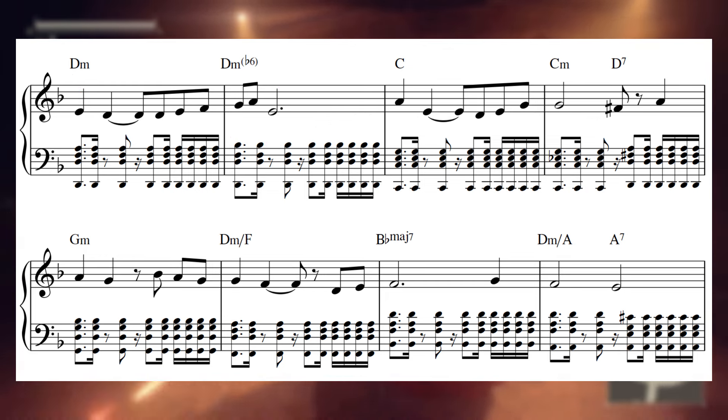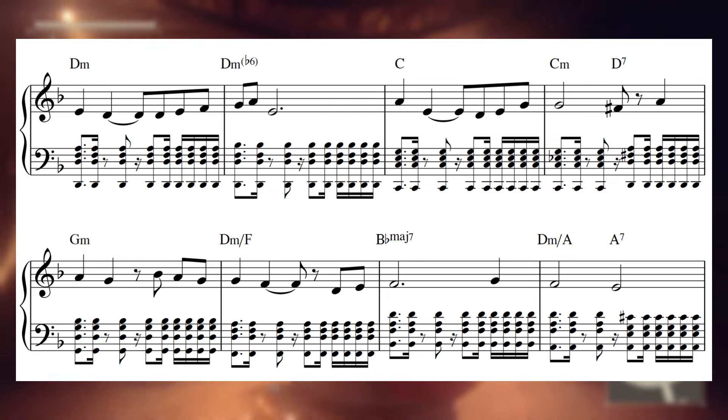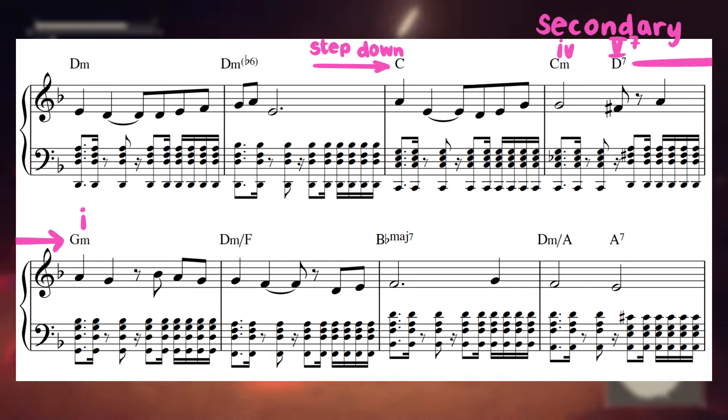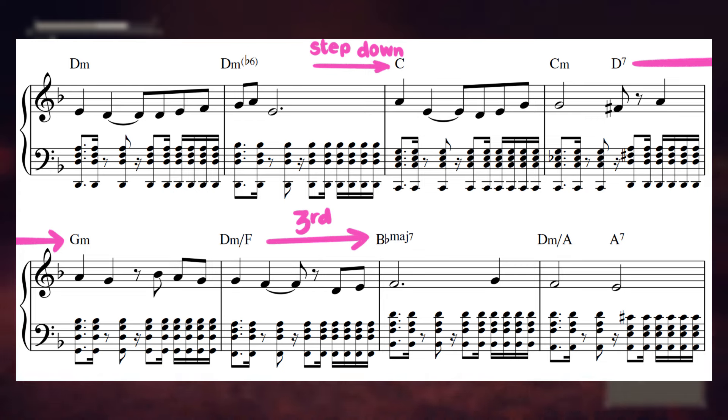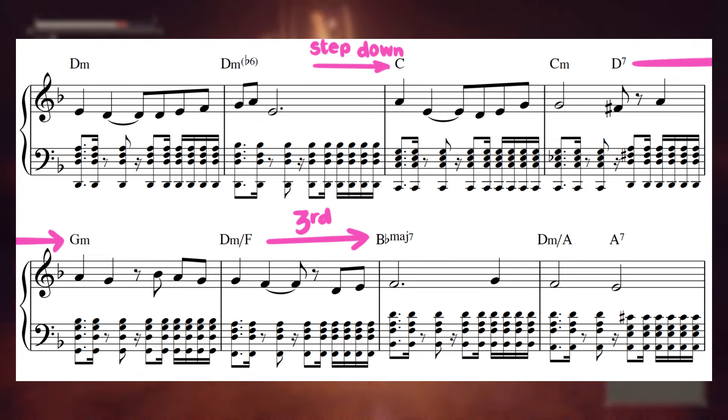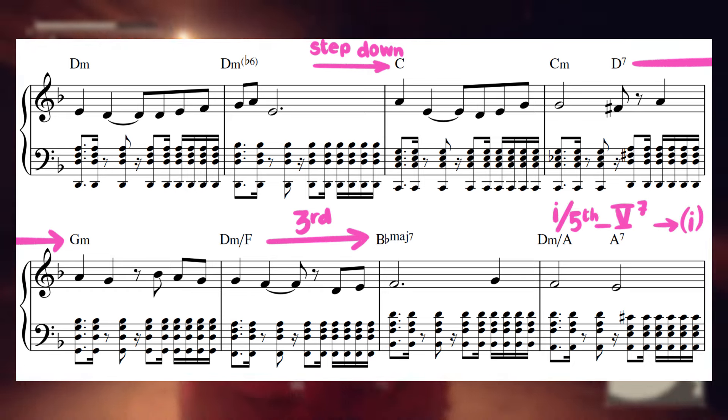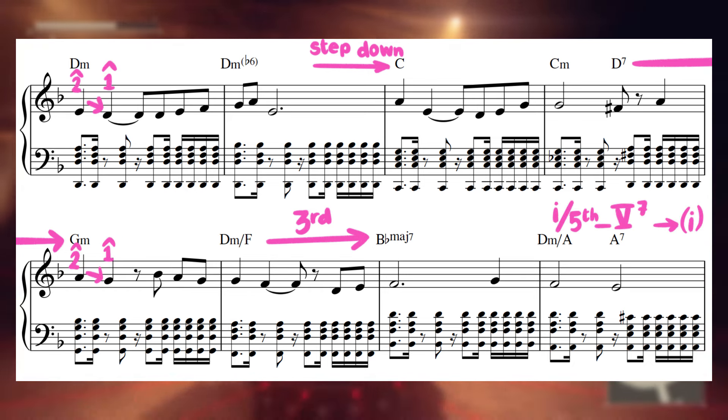The harmony mixes soft and classical techniques here. We have stepwise motion down to the b7 chord, but then we have a secondary dominant resolution to the 4 chord. The following move of a third from our inverted tonic D minor chord to a Bbmaj7 feels very soft, but it's immediately countered by the classic 1 over its 5th to 5-7 to 1 cadence.